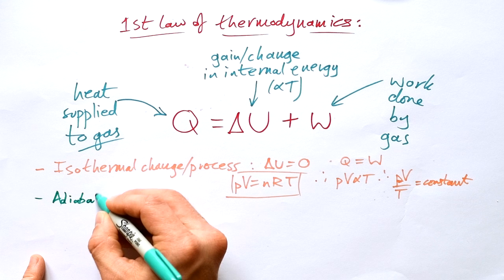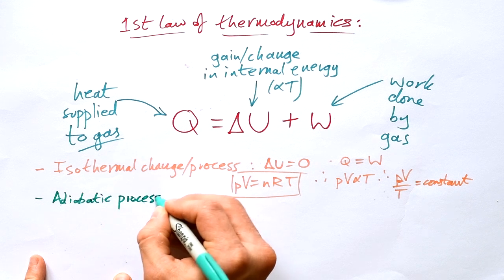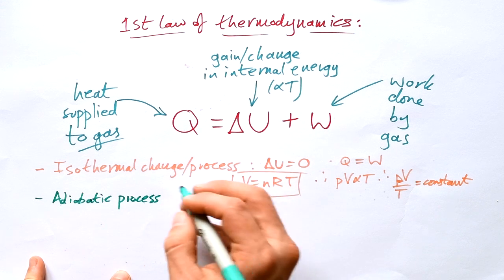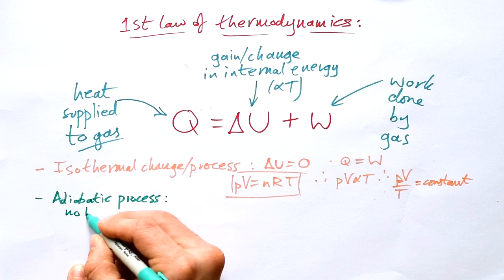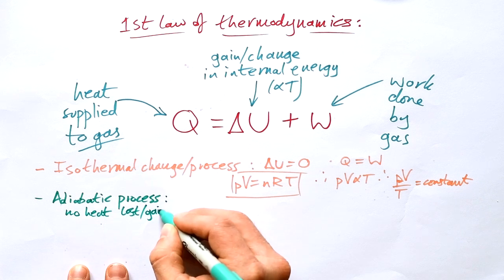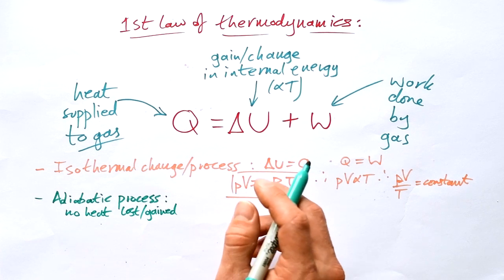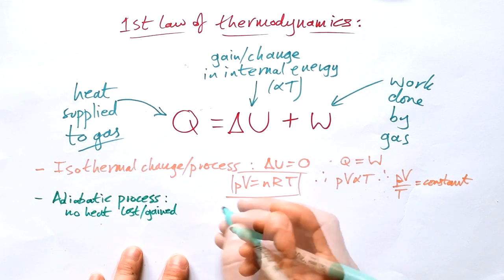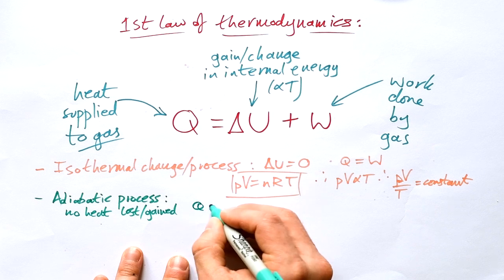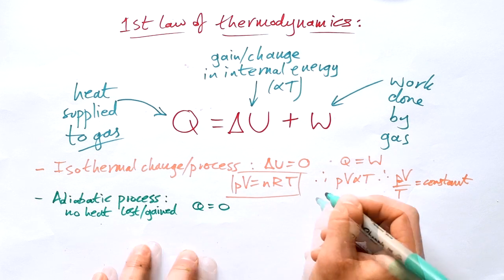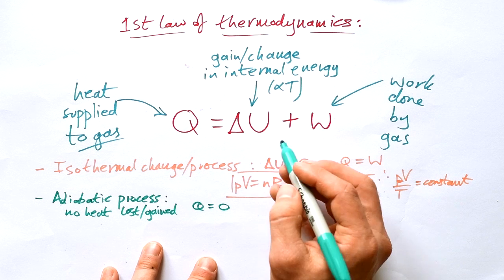Let's go for another one. Adiabatic. Some people say adiabatic. I like saying adiabatic. That is when no heat is lost or gained by the gas at all. No heat is supplied to the gas and no heat is lost by the gas. And so if that's the case we know that Q is equal to zero.